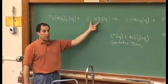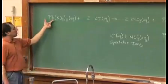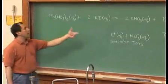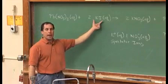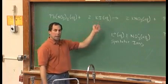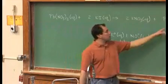They'll continue to float around in the solution, but the lead two plus and the I minus will get together and make a precipitate, a solid, the yellow solid that goes down to the bottom of the beaker.